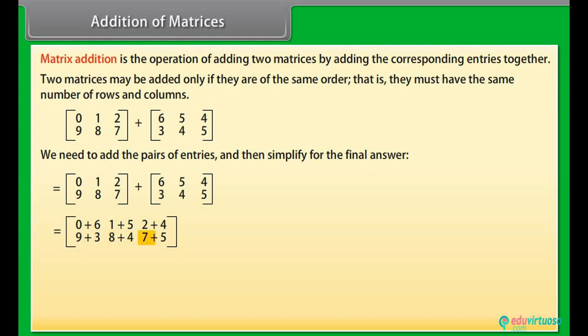The result is: first row [6, 6, 6], second row [12, 12, 12]. So the final answer matrix is: row 1: 6, 6, 6 and row 2: 12, 12, 12.